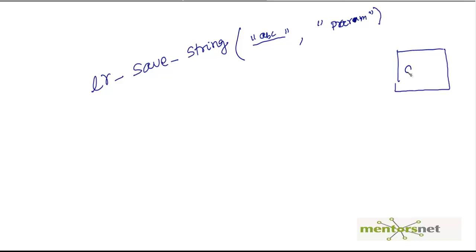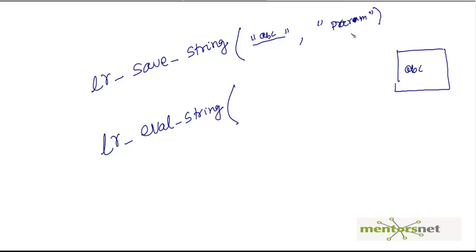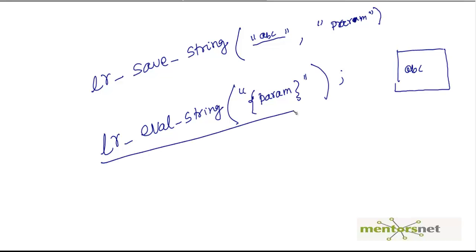The parameter is stored somewhere — let's say ABC is stored somewhere. How do I get the value? To get the value, you use another function called lr_eval_string. In lr_eval_string, you give the parameter name within curly braces. This lr_eval_string is going to find out what value is stored in that parameter and it will give you back ABC.